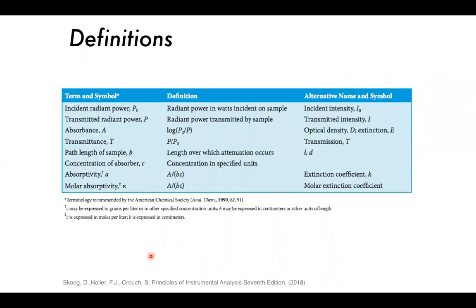The total absorbance equals epsilon of species one times the path length times the concentration of species one, plus epsilon of species two times the path length times the concentration of species two, and so on. Key definitions: incident radiant power P0 is the radiant power in watts incident on the sample; transmitted radiant power P is the radiant power transmitted by the sample. Molar absorptivity is given the letter epsilon, with concentration in moles per liter and B in centimeters.